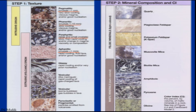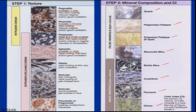Feldspar-rich rocks include quartz, plagioclase or potassium feldspar, and muscovite mica. On the other side, biotite is a mafic-rich mica, and then we have amphibole and pyroxene. These are very important color index indicators which you can use to identify rocks along with the texture.